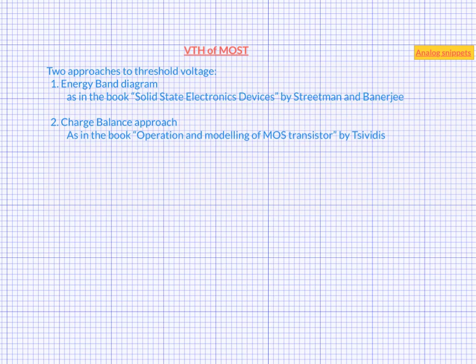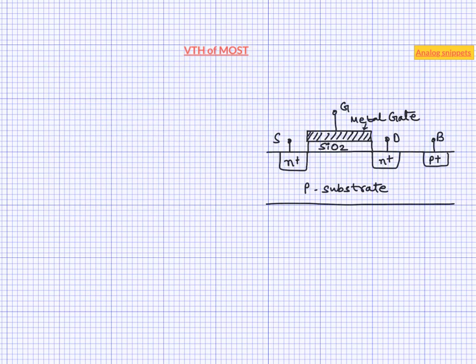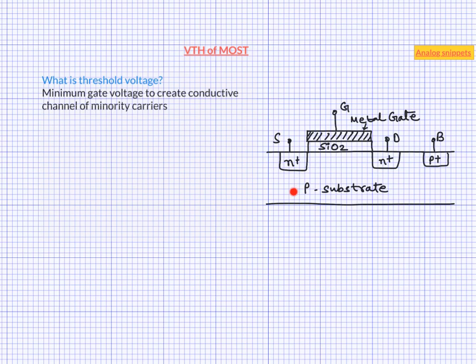Also in most of the video I would take NMOS as an example to explain the concepts. So let us start with a very simplistic view of threshold voltage because even that gives some very useful insights. Threshold voltage is the minimum gate voltage required to create a conductive channel of minority carriers beneath the gate. So in a P substrate the minority carriers are electrons, so we need to create a channel of electrons. And in order to attract electrons, which are negatively charged, we need to apply a positive voltage at the gate.